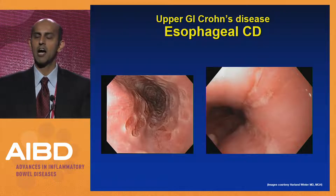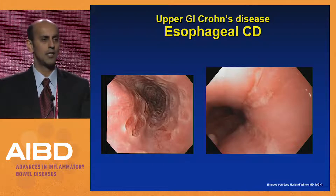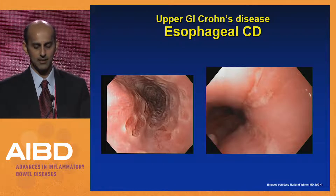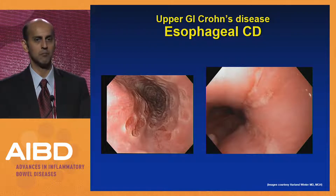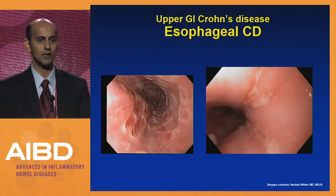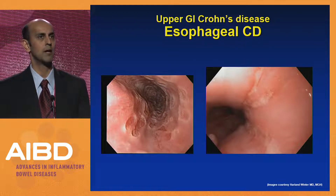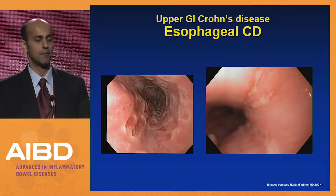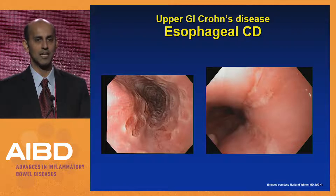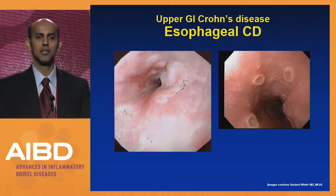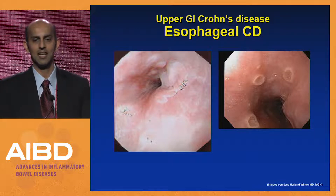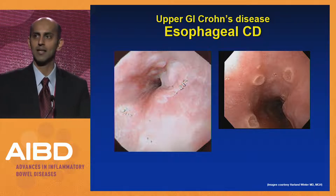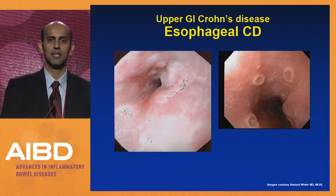These are pictures courtesy of pediatric GI colleagues at MGH showing the different ways esophageal Crohn's can present. In one image you see more linear ulcers; in another, punched-out ulcers with some narrowing and reduced caliber of the esophagus. Additional images show a possible site of fistula and more discrete aphthous ulcer-like lesions in the esophagus.